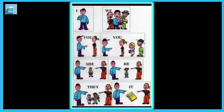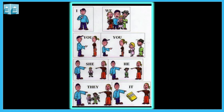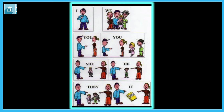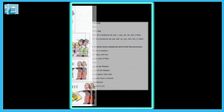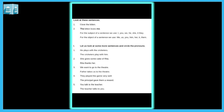We means we are talking about ourselves. They — we are talking about a group or more than one noun. It means one object, non-living things, or an animal.